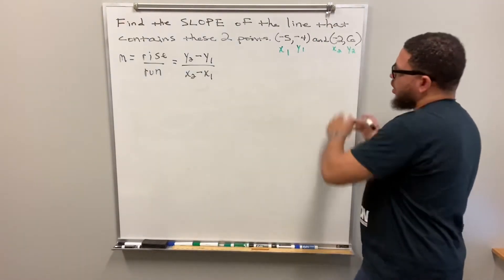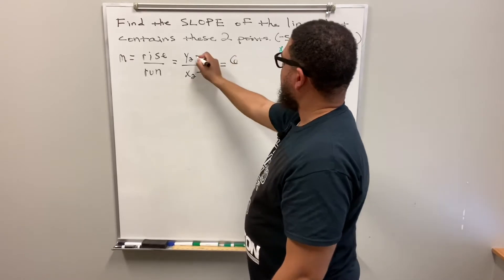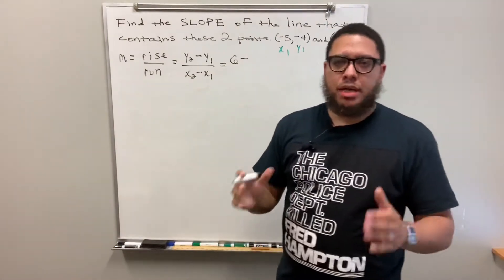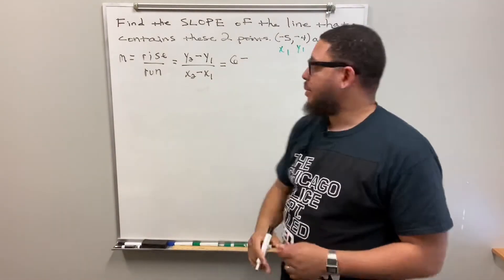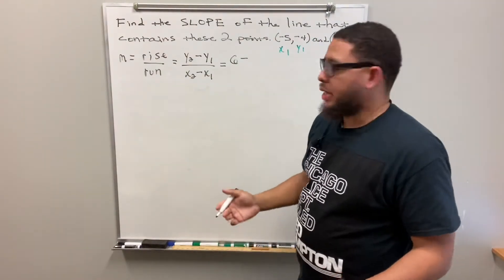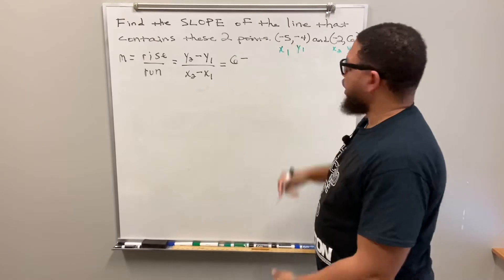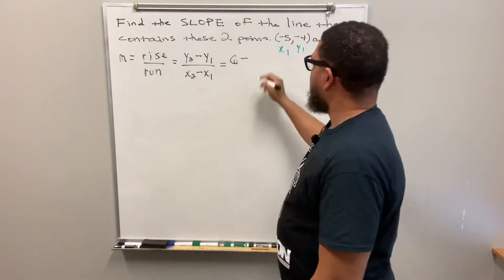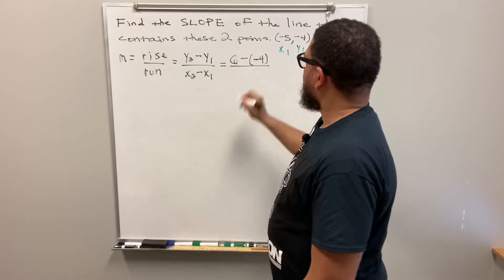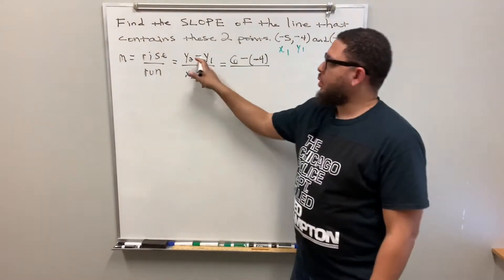Now that I know my values, I'll throw them into the formula. y₂ is six, then my minus sign, then y₁ is negative four. I want to pay particular attention here because a lot of students don't like to write two negative signs back to back. But the formula already has a minus sign in it, and if your y₁ is negative, you need another minus sign. So write six minus negative four — not just six minus four, because this is a negative four.